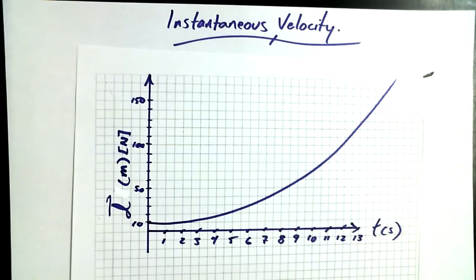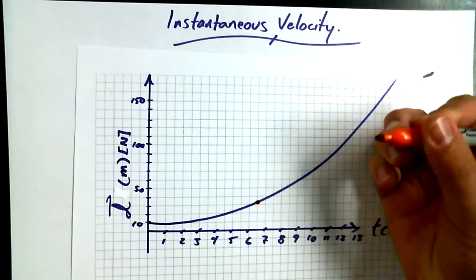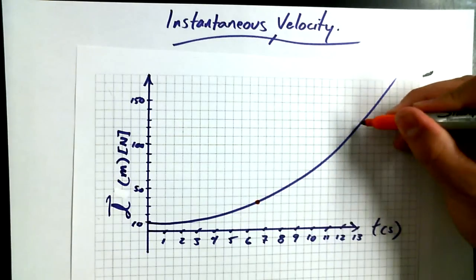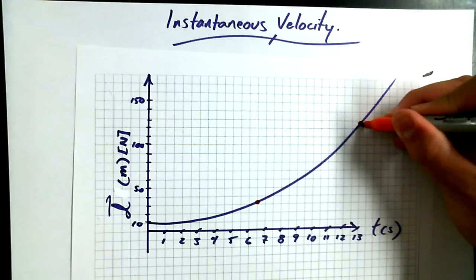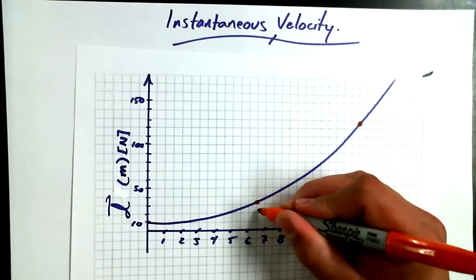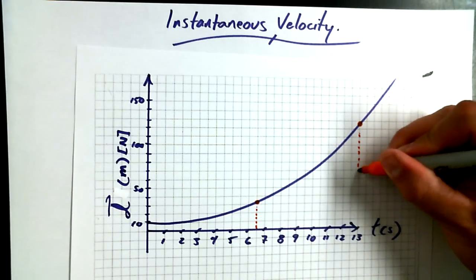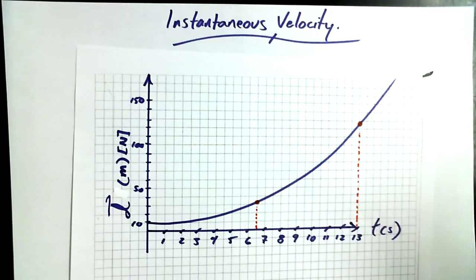I want to choose two points on my graph. I'm going to choose one at 6.5 seconds and one at about 13 seconds. That data point matches up with what happened at 6.5 seconds, and that data point matches up with what happens at 13 seconds — just so there's no confusion at all.